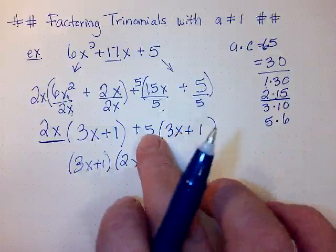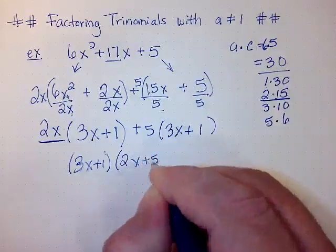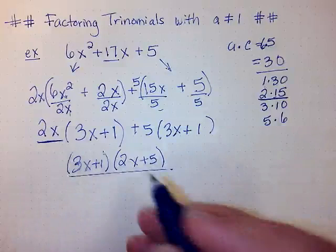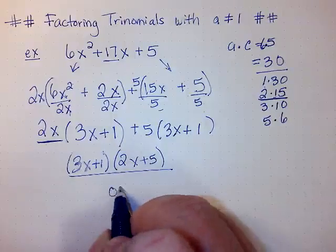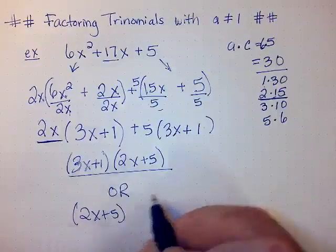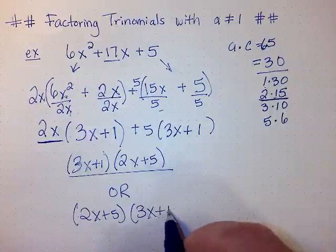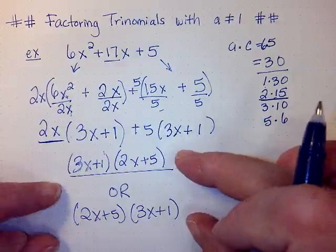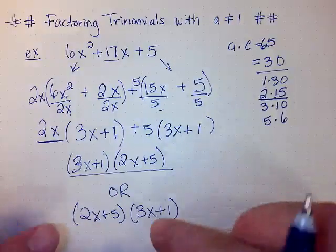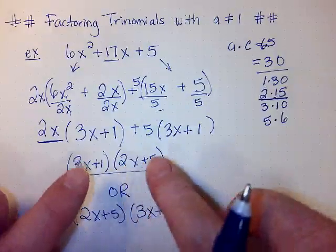We also need to know that you can write this as (2x + 5) times (3x + 1). So both of these are the same because it's multiplication. The order doesn't matter as long as each factor is remaining the same with the signs. And again, this is all positive, but if there were some negatives in there, you would want to make sure that that stayed with each factor.